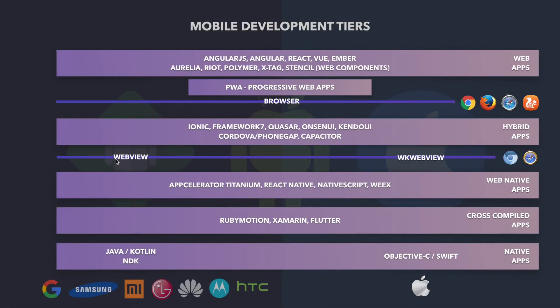Now it's time to sum up all of the tiers that we created and discussed in the previous videos. I left this area intentionally blank because I'd like to add some labels that might help you to understand and identify the capabilities of those different tiers. But before we start showing the labels, I'd like to mention two different players I've just added to this slide.